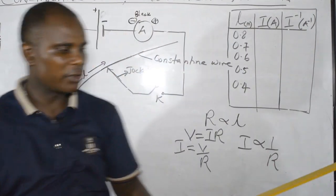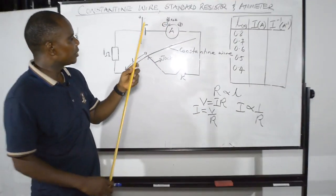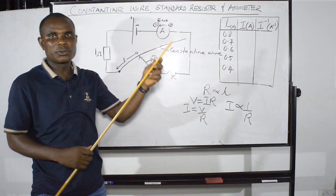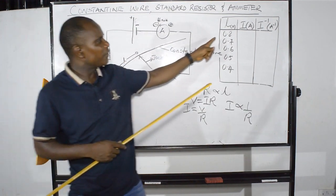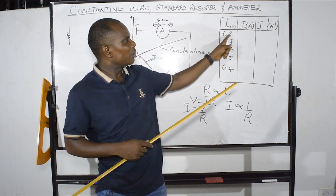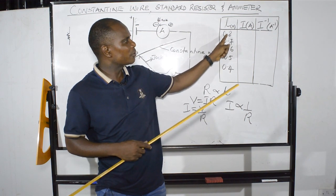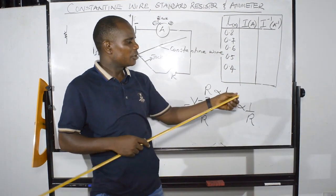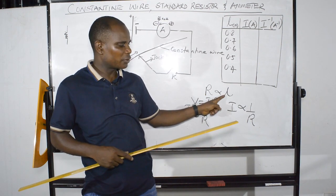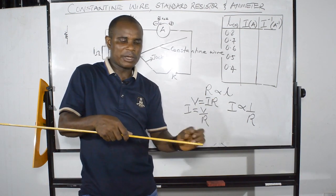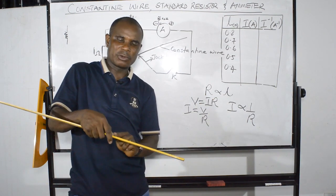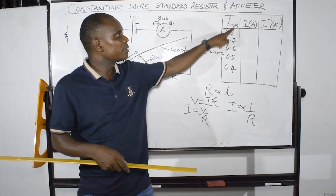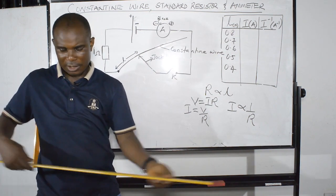So now this is the meter rule given to you. The meter rule is to get the length of this constantan wire, which by extension gives the resistance — since resistance is directly proportional to length. So 0.8 meters is 80 centimeters.